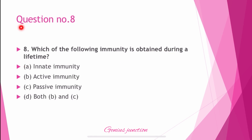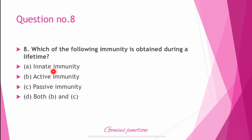Question number 8: Which of the following immunity is obtained during lifetime? Options are: innate immunity, active immunity, passive immunity, and both active and passive immunity. The right answer is D — both active and passive immunity. Innate immunity is present in our body from birth, while active and passive immunity are obtained during lifetime.